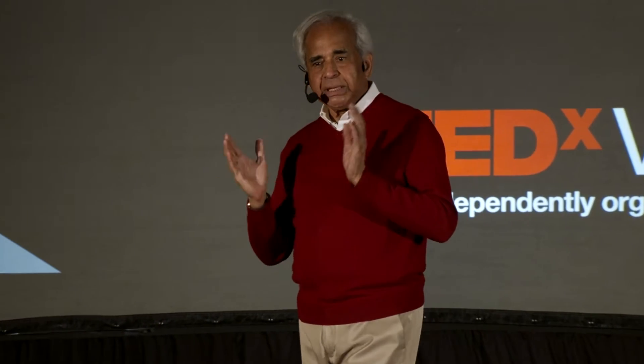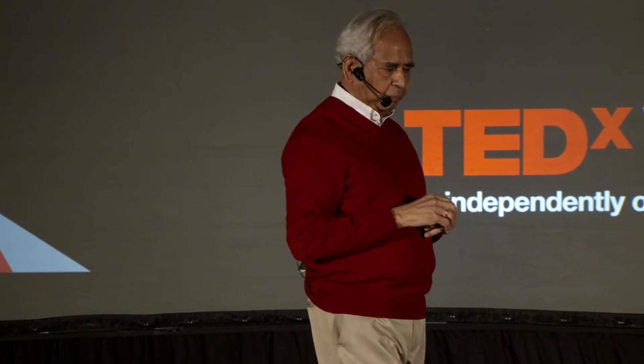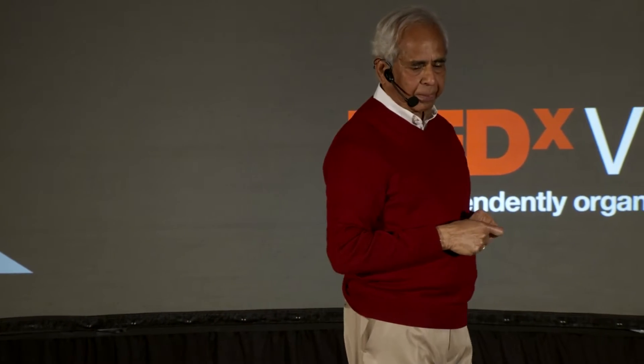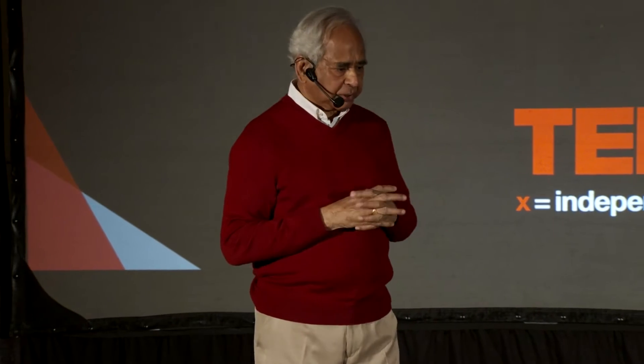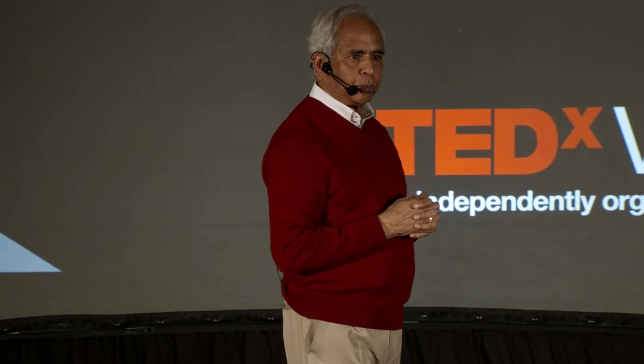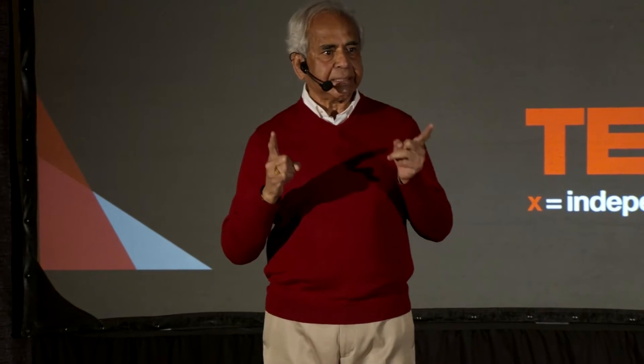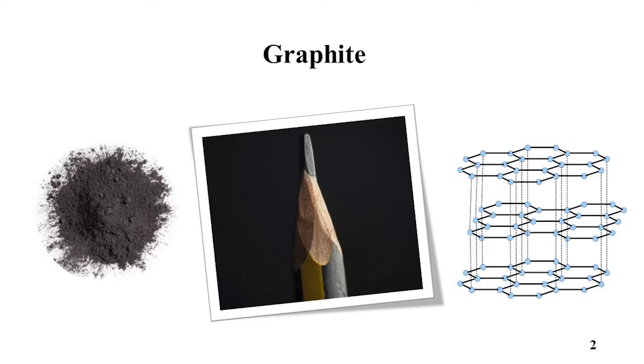Imagine now we give nature a bunch of carbon atoms — tiny marbles if you like — and ask nature to arrange these carbon atoms. Nature does things differently than you and I would do. She always tries to find the most stable structure she can make. And for carbon, the most stable structure is graphite.